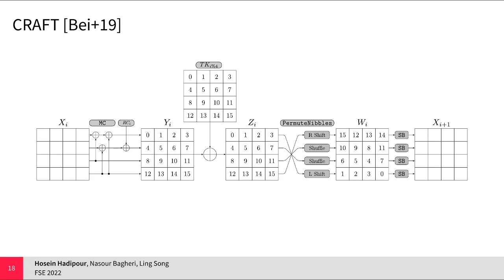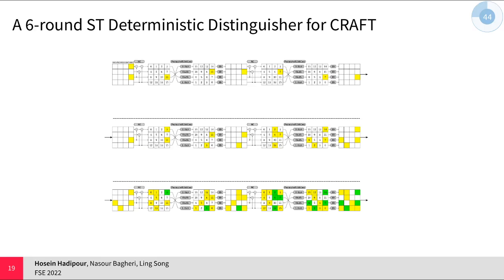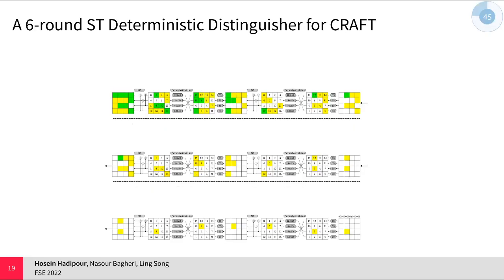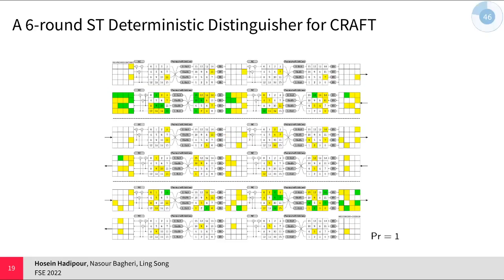Our boomerang distinguishers are in the single-tweaker setting. This shape represents our six-round deterministic distinguisher for CRAFT, discovered by our tool. Yellow squares represent nonzero differences, and green squares represent any possible difference, meaning the difference can be zero or nonzero due to differential cancellation over the diffusion layer. This shape shows the activeness pattern over the upper trail, and this shape shows the activeness pattern over the lower trail. When put together, there is no common active S-box between the upper and lower trail, and as a result, due to the ladder switch, the probability of this distinguisher is 1.